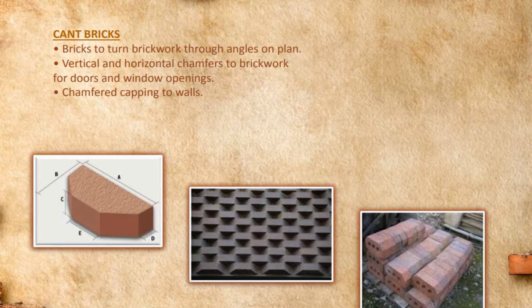Other types of bricks are the kent bricks, used to turn brickwork through angles on plan, with vertical and horizontal chamfers to brickwork for doors and window openings, and forming coping to walls.